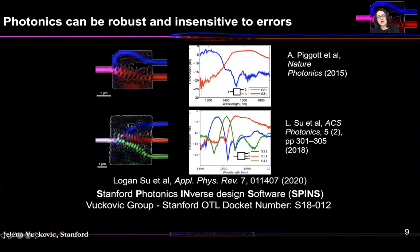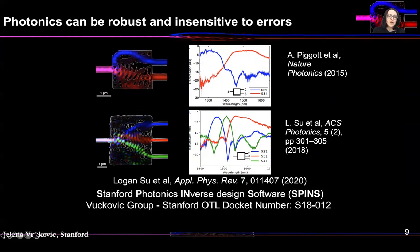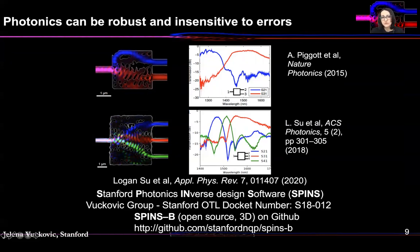Since we've been working on this for more than a decade, my group has developed software called the Stanford Photonics Inverse Design Software, or SPINS for short, which quite a few major companies have licensed out of Stanford. Academic groups and government labs can also license it by contacting Stanford's Office of Technology Licensing. We have also released an open-source basic version called SPINS-B, available on GitHub. It's not as powerful as the full SPINS and doesn't have a graphical interface, but it has interesting functionalities that many academic researchers are using.